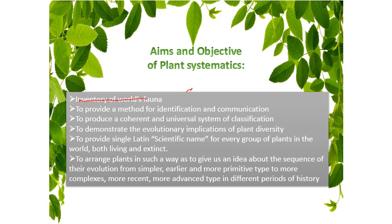Plant systematic provides the factors of evolution to find out the origin of species and their interrelationships. Taxonomists not only study species existing today but also reveal the changes they have undergone in the past, demonstrating the evolutionary implications of plant diversity. Plant taxonomy, as a component of plant systematic, provides the correct naming of plants according to the international code of nomenclature. The naming of plants is guided and regulated by international rules of botanical nomenclature.